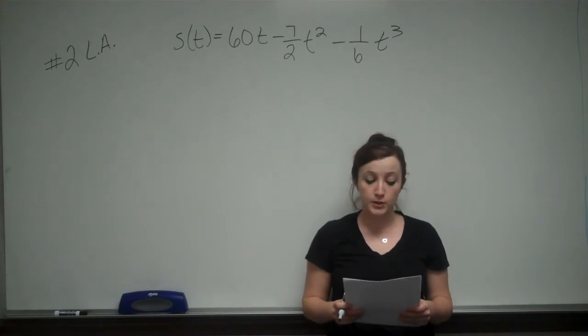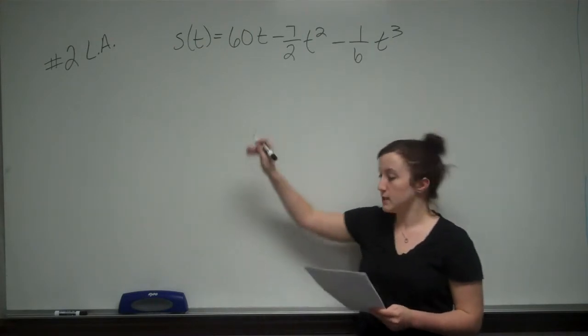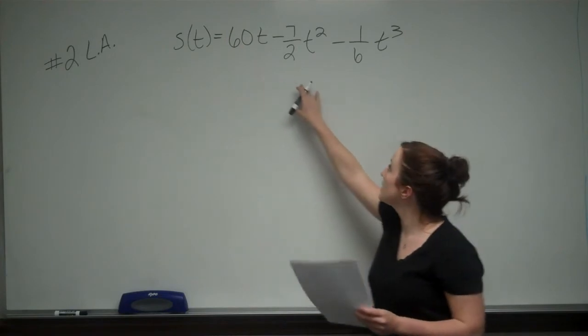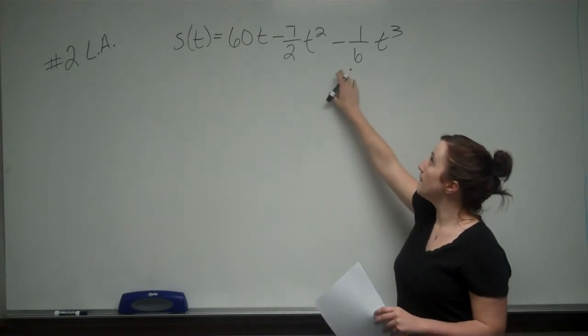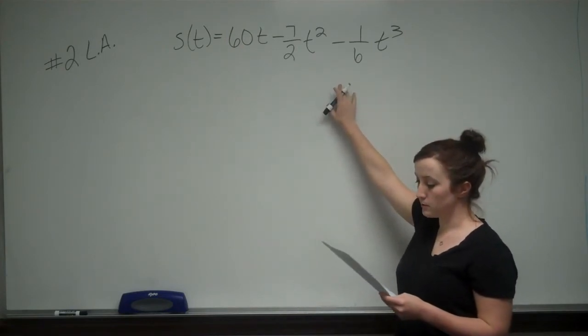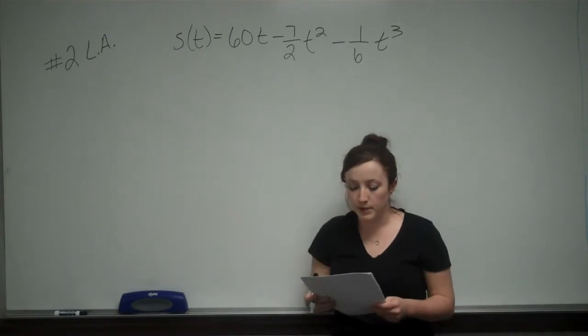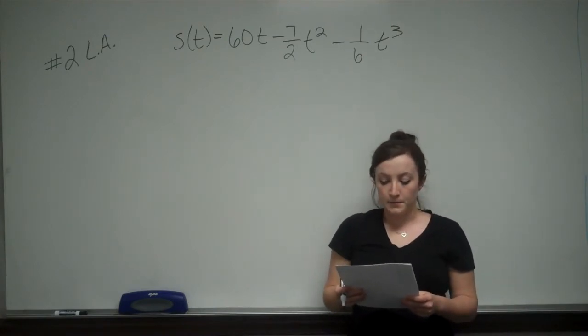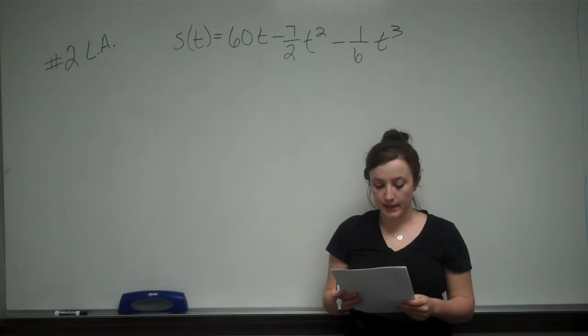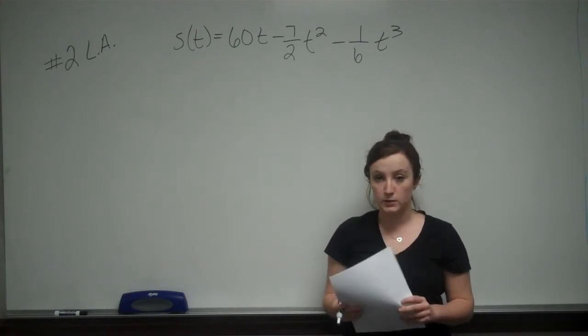For one car, the position function was determined to be S(T) equals 60T minus 7 halves T squared minus 1 sixth T cubed, where S(T) is measured in feet and T in seconds, and where T equals 0 corresponds to the time the brakes were first applied.